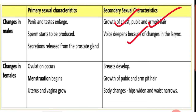The female secondary sexual characters at puberty include: breast development, and growth of pubic and armpit hair. Pubic hair refers to hair growing in the area around the reproductive organs. Coarse hair develops in that area.